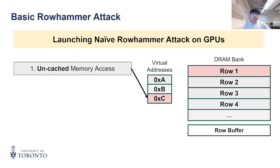Let us review the most basic Rowhammer workflow for GPUs. First, the attacker needs to access memory addresses uncached, otherwise the access doesn't go to DRAM. Then, the DRAM will try to retrieve data from the physical row the address is mapped to.